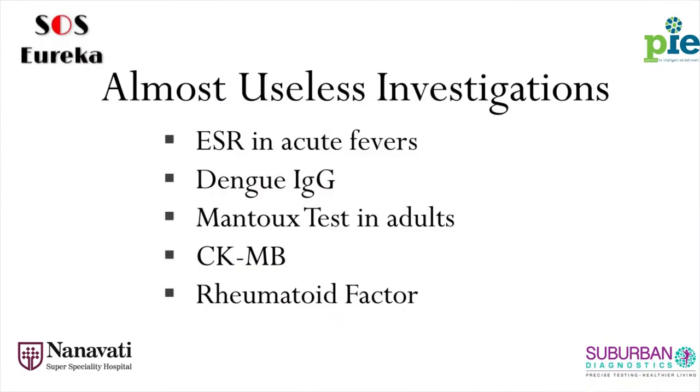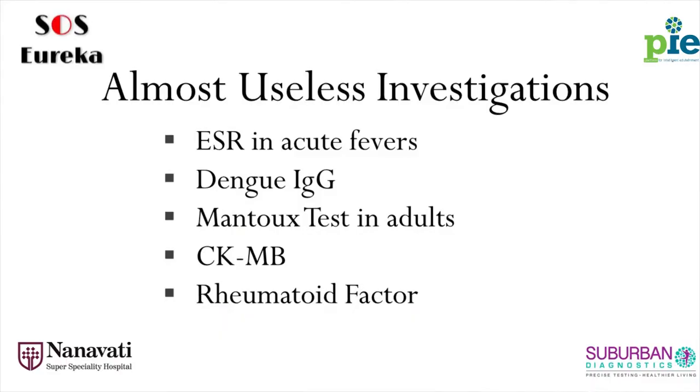CKMB — the cardiac-specific fraction — is a very commonly done test in ICUs. Gradually, because of the advent of troponins, CKMB has lost its value and should become obsolete, just as SGOT and LDH, which we learnt as markers of cardiac ischemia, have already become obsolete. Rheumatoid factor: I have stopped doing it in almost every patient because of better availability of anti-CCP antibodies.